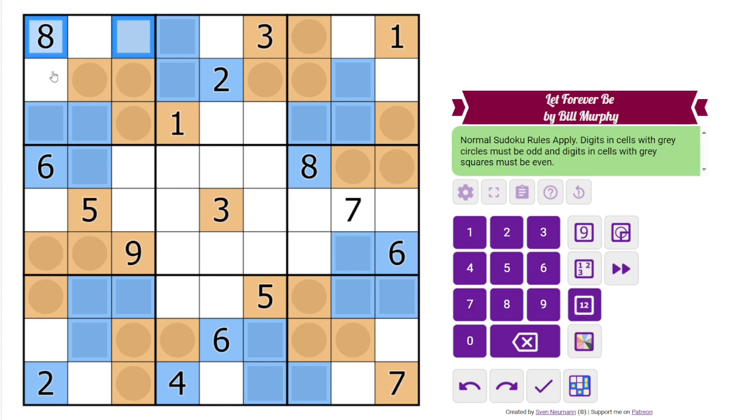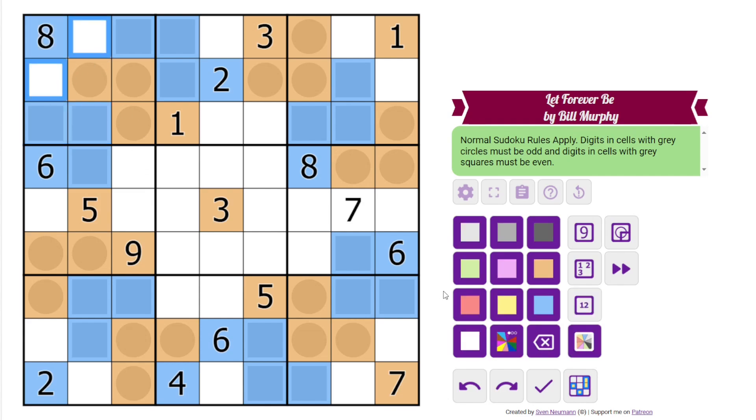Alright, the first thing we can do is look at box 1. We already have 4 blues. We have 4 even digits. There are only 4 even digits between 1 and 9. So the remaining cells in the box must be odd. This column only has one digit remaining. We have our 4 even digits. So this one must be odd. This box has its 4 even digits. This must be odd.